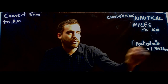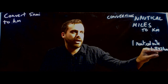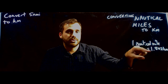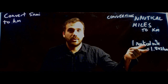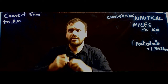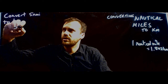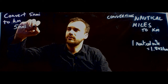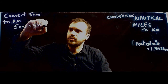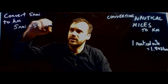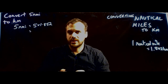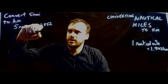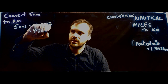We know that one nautical mile is equal to 1.852 kilometres. So if we want to know what five nautical miles is equal to, we just need to multiply that by 1.852. It's very simple: five nautical miles is equal to five times 1.852. Type that into your calculator and you should get 9.26 kilometres.